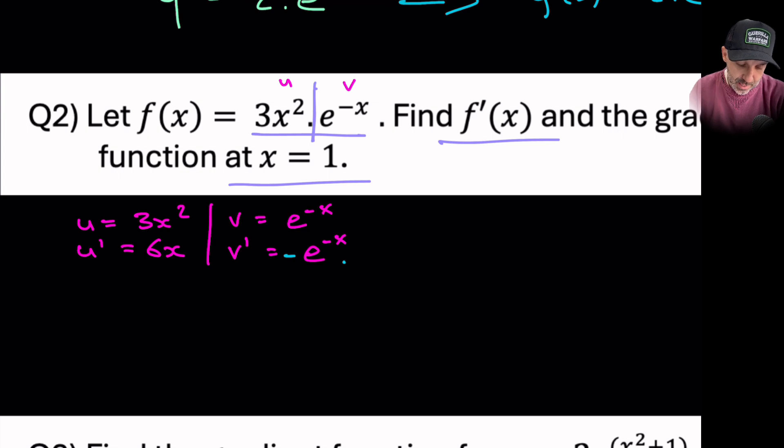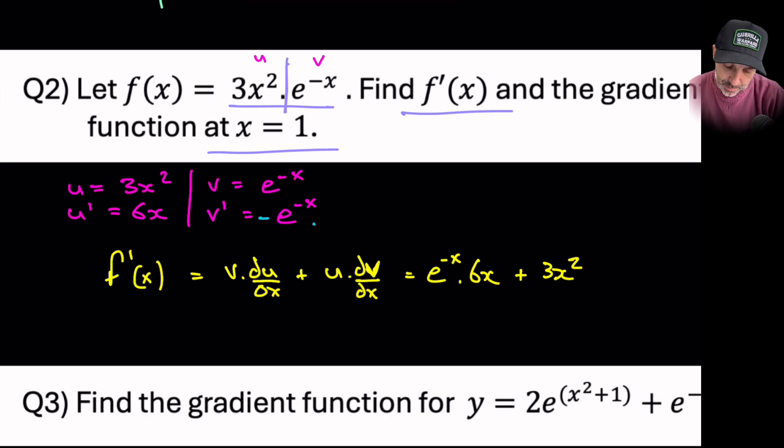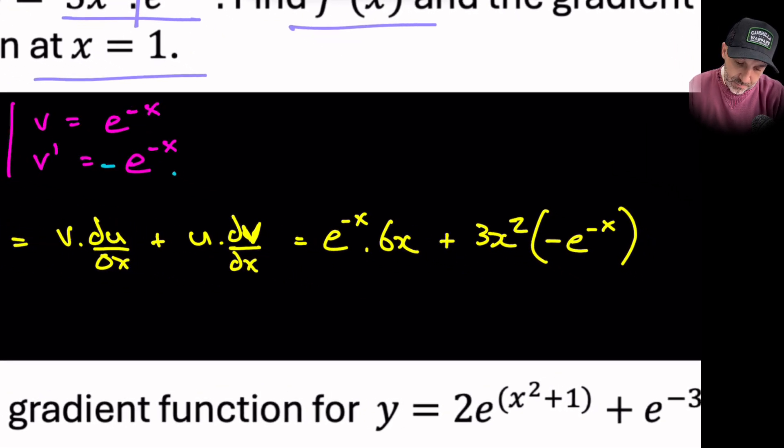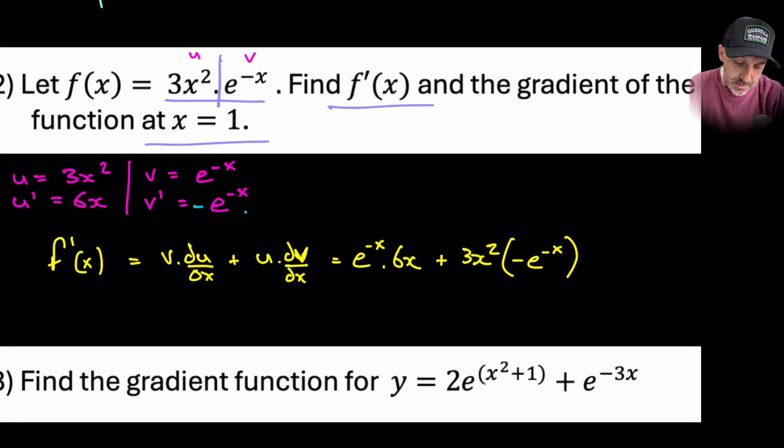Now the product rule states that the derivative of a function is v times the derivative of u plus u times the derivative of v. We're going to substitute everything in here. So v is e^(-x), du/dx is 6x, plus u which is 3x^2 times by the derivative of v which is negative e^(-x). Now I could tidy this up. Obviously this expression is all negative, but I'm not going to waste time doing that because I simply want to go ahead and substitute in the value that they've asked us to do, which is 1.